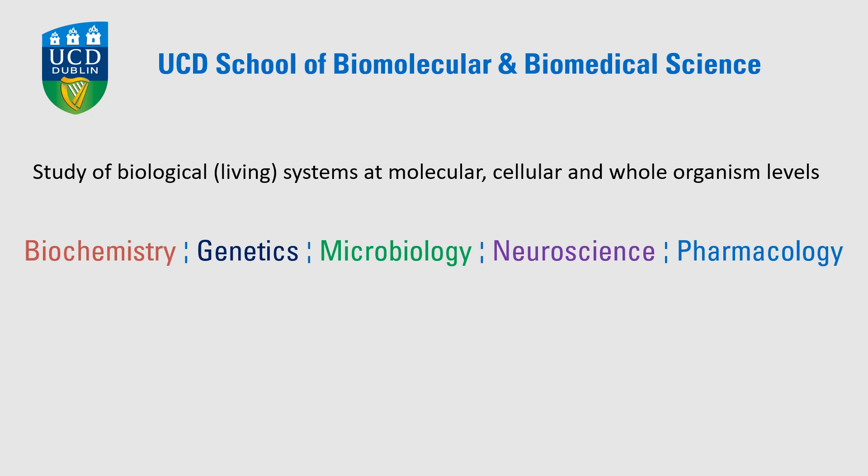We have five different disciplines within the School. Biochemistry concentrates on the machinery inside the cell — the proteins, enzymes — how they work and how they control how the cell behaves. Genetics concentrates on the DNA and the genetic makeup of cells, and how that can influence cell behaviour, and how when DNA gets damaged it can manifest as a disease or some sort of disorder.